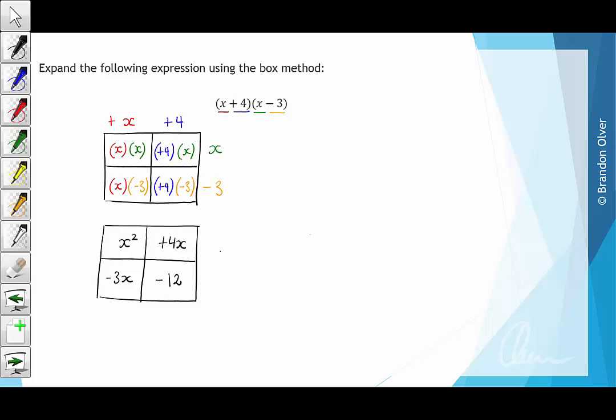So now that we've cleaned up the multiplication we need to just add all the terms together. So we get x squared plus 4x minus 3x minus 12.